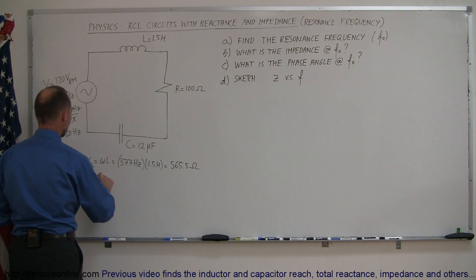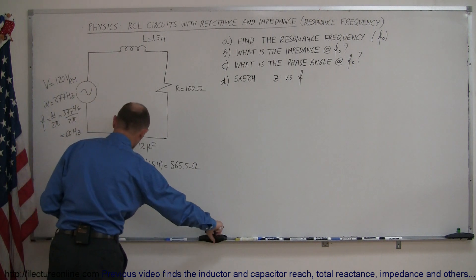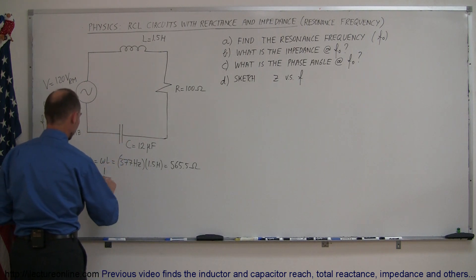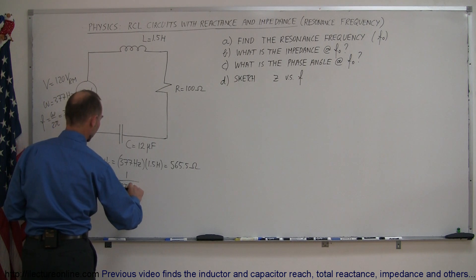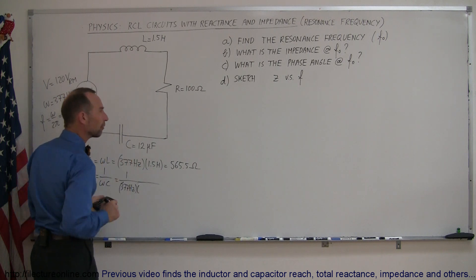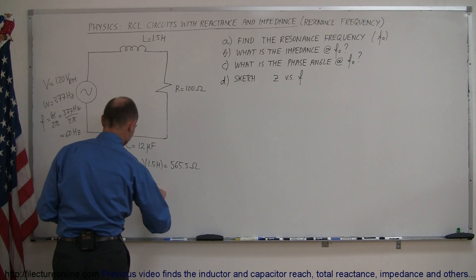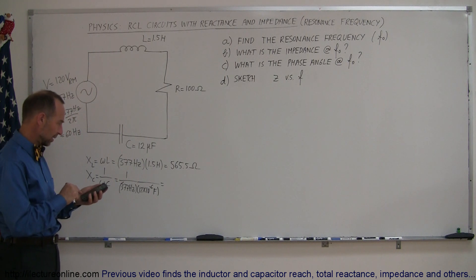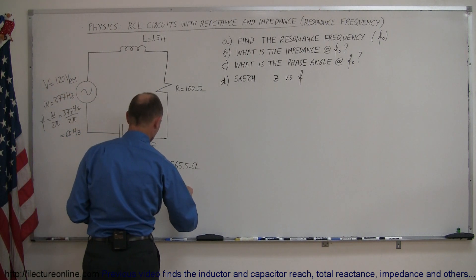And then for the X sub C is equal to... Oh nope, that's not correct. It's 1 over that. That would give me definitely the wrong answer. So it's 1 over ω times C, which is 1 over 377 Hertz times 12 microfarads, that is 12 times 10 to the minus 6 farads. So we have 377 times 12E to the minus 6, take the inverse of that, and we get 221 ohms.